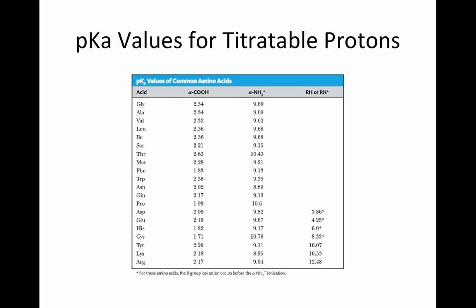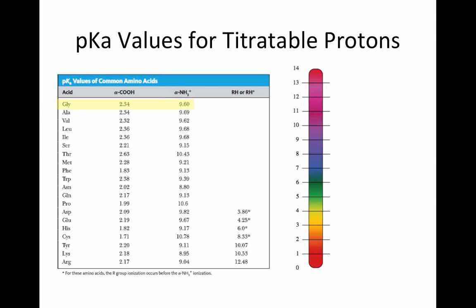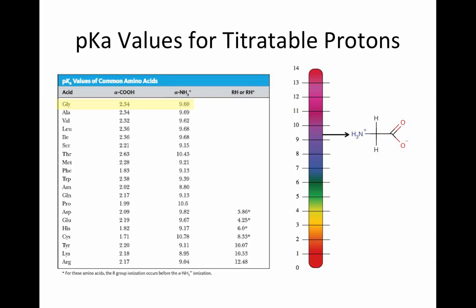Let's use glycine as an example. In this chart of pKa values, we are given the pKa of the carboxylic acid proton and the amine proton. At low pHs, all of the protons will be associated with the amino acid. As we increase the pH and reach the pKa of the carboxylic acid proton — 2.34 — that proton will dissociate and the amino acid acquires a neutral charge. If we continue to increase the pH to the pKa of the amine proton, 9.6, the amine proton also dissociates and the amino acid now has a negative charge. At this point, there are no remaining titratable protons.